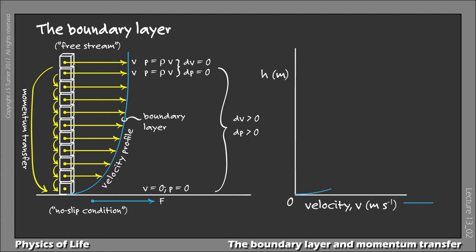This is just a restatement of the no-slip condition. With increasing height above the ground, the velocity increases until it asymptotically reaches the free stream velocity. At this point, flow velocity remains the same no matter how high you measure.